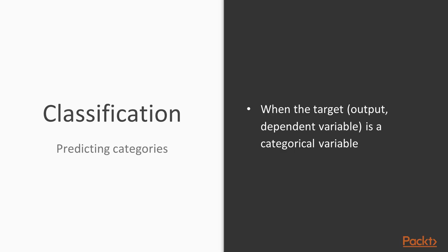As a brief reminder, a few sections ago we said that classification tasks are the ones where we are trying to predict categories, or in other words, when the target is a categorical variable.